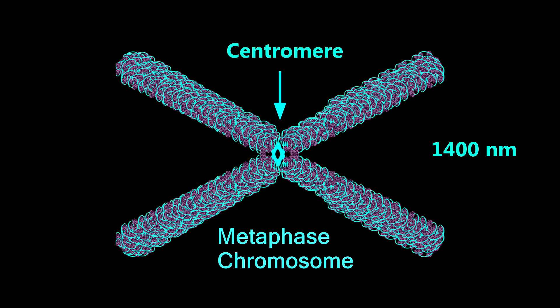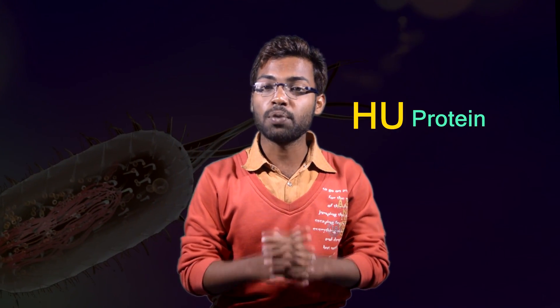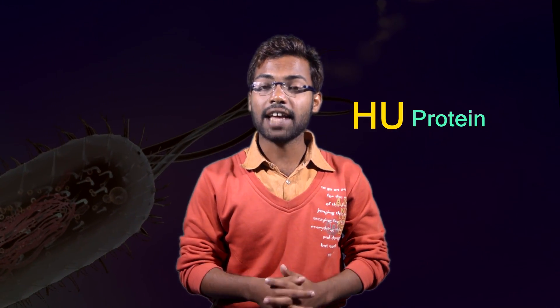Now, some extra information about histone protein. You know very well that the prokaryotic cell has no histone protein, but in E. coli cells there is HU protein which acts like H1 and H2.